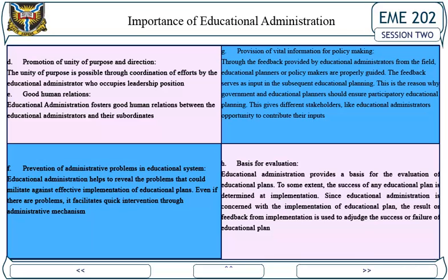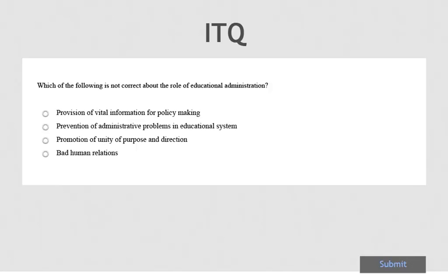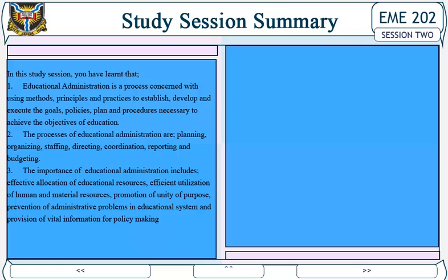B. Effective allocation of educational resources: From the definition of educational administration, systematic allocation of resources is emphasized. It is through true administration of education that resources made available to education are properly allocated. Human resources are assigned responsibilities in line with their specialization to avoid wastage. This is the emphasis of division of labor under the bureaucratic principle of administration.